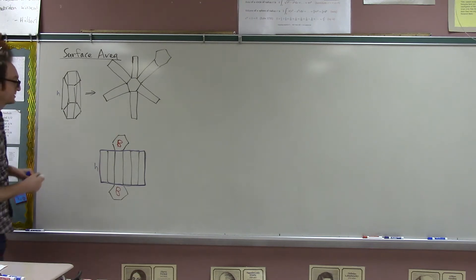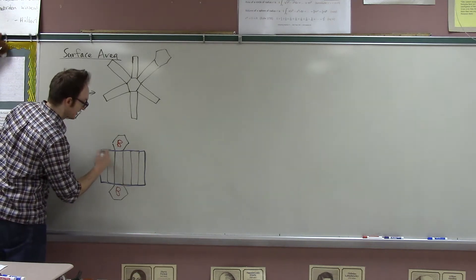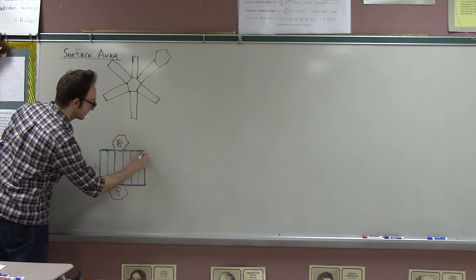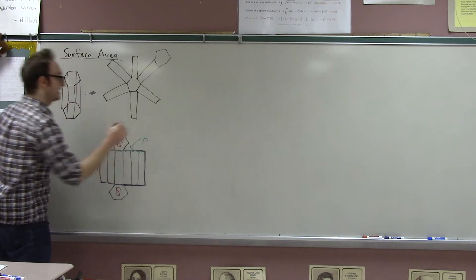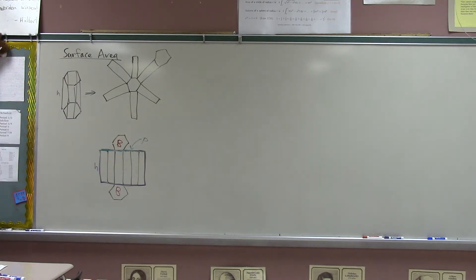Well, this dimension is just the original height of the prism, just H. And this other dimension, this one here. Well, this green line was the one which wraps all the way around the hexagon. So this is P, the perimeter of the hexagon.